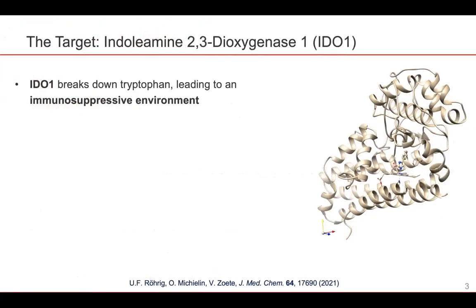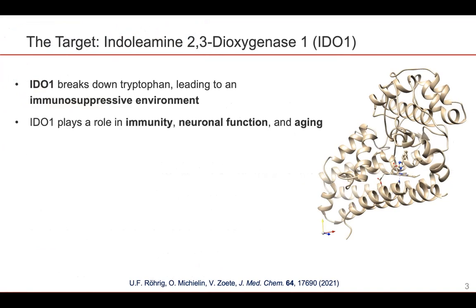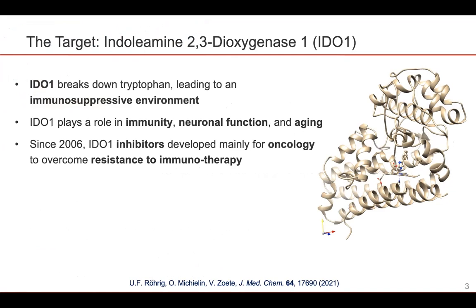The target that I will be speaking about today is Indoleamine-2,3-Dioxygenase-1, or IDO1. IDO1 is an enzyme that breaks down tryptophan, leading to an immunosuppressive environment. It has been shown that IDO1 plays a role in immunity, neural function and aging. And since 2006, IDO1 inhibitors have been developed, mainly with a focus on oncology, in order to overcome resistance to immunotherapy.